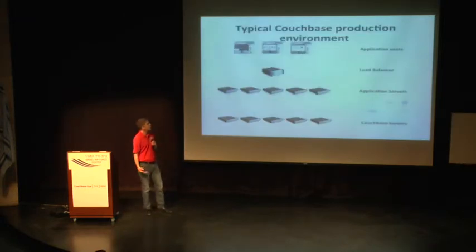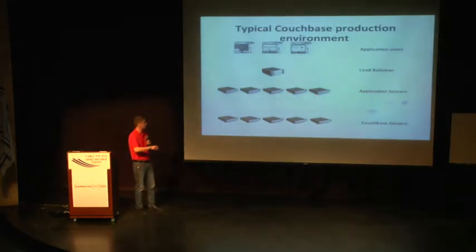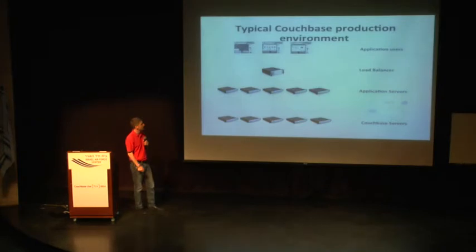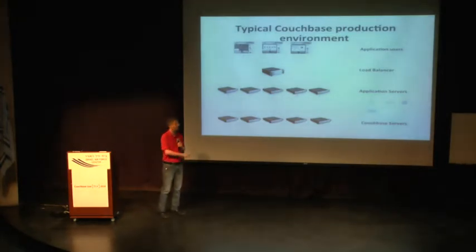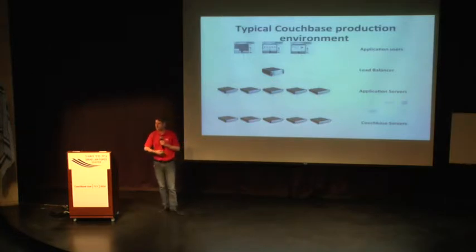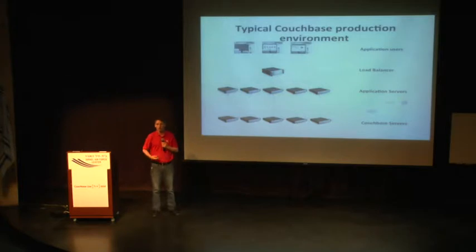This is the very typical environment that we're talking about: a number of users, be they via browsers or mobile clients, coming into a load balancer or multiple load balancers, spread out to application servers, which are then interacting with the Couchbase nodes in one or more clusters. Traditionally, this application server tier has been very well understood — you know how to scale this layer. As you need more connections, as you need to handle more users, you can just add another box, distribute the load. The cost is linear, the performance is the same. But the database layer traditionally has been a single point — a monolithic MySQL or Oracle.